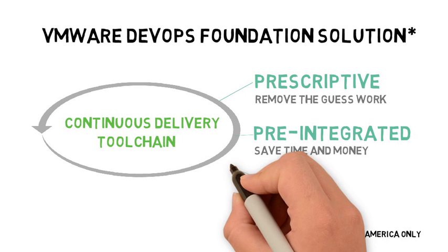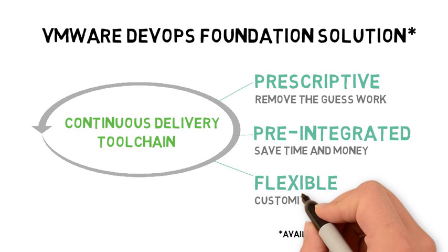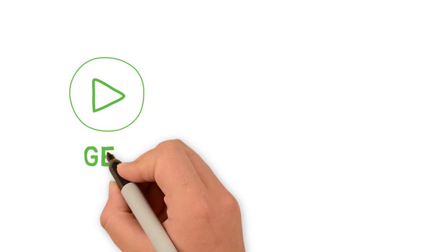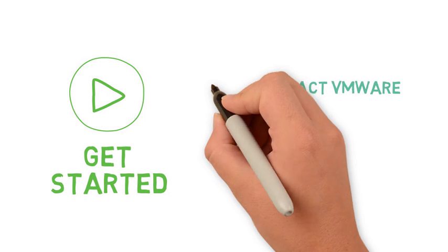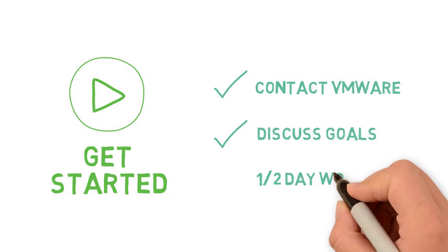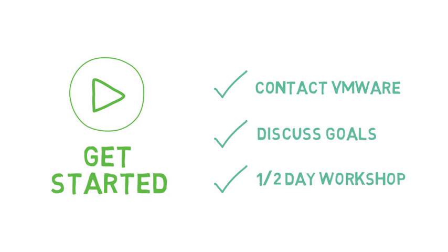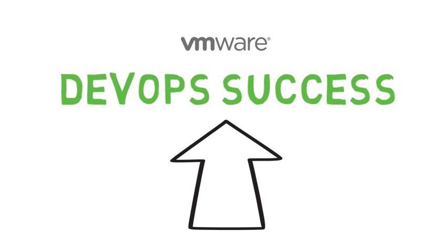Worried that you're already using a tool that you didn't see in this presentation? Don't worry. These stacks are flexible and we have worked with almost every tool in the landscape. Creating the DevOps toolchain that can work for you can be complicated, but we're here to help. To get started, contact your VMware rep to set up a one-hour meeting with my team to discuss your goals for continuous development. We will then schedule a half-day workshop on continuous delivery and DevOps best practices with your development and operations leaders. We look forward to working with you to make your dreams for accelerated application delivery a reality.